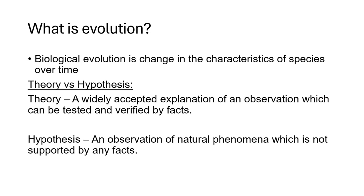Let us first try to understand what is evolution. We usually define biological evolution in Grade 12. So we say that biological evolution is the change in the characteristics of species over time. Scientists believe that we have evolved from something that is different from what we are right now. We are just talking about how the characteristics of our ancestors changed.